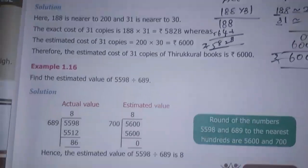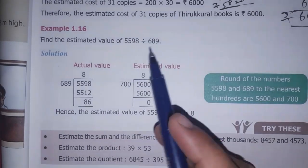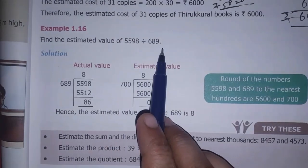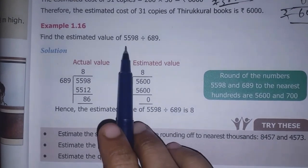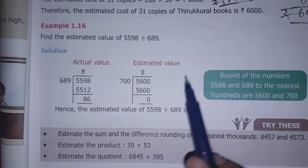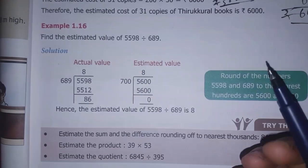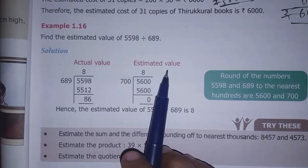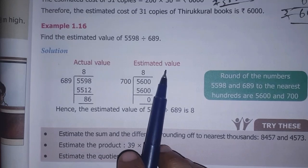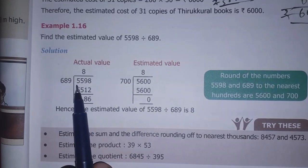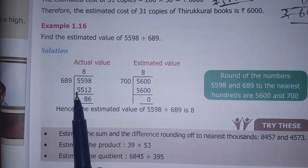Example 1.16: Find the estimated value of 5,598 divided by 689. We need to find the estimated value. Round off each number to the nearest hundreds. The actual division: 5,598 divided by 689 gives approximately 8 with remainder, so the actual value is about 8.